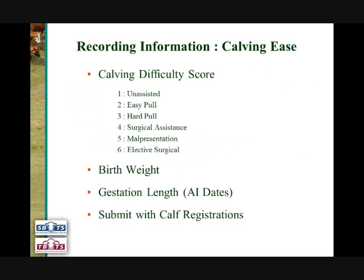The Calving Ease EBVs, both Calving Ease Direct and Calving Ease Daughter's, are calculated based on three different sets of information. The primary piece of information used to calculate these EBVs is Calving Difficulty Scores.